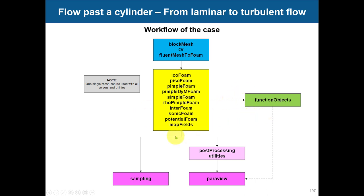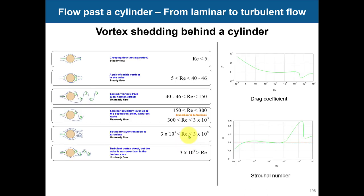Just to refresh your memory on the physics: you have this cylinder and depending on the Reynolds number you can have different behaviors. Below the critical Reynolds number for onset of instability, you have a steady flow. Then you have the von Kármán street with vortices being released. However, this unsteadiness doesn't mean the flow is fully turbulent - it's still laminar. Then you get transition and fully turbulent flow. Roughly speaking, above Re ~300 you are in the fully turbulent region.